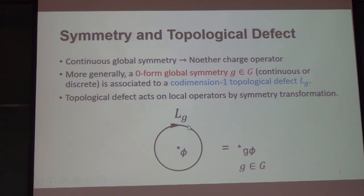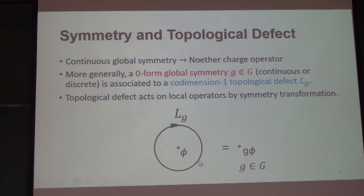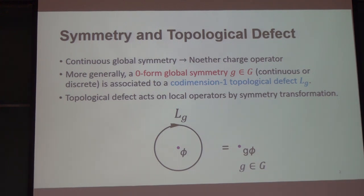As you shrink this co-dimension one topological defect to smaller and smaller size, since it's topological you don't change the answer at all. When the manifold is extremely small, this reproduces a local operator for you. In the case when this topological defect is the charge operator of a certain symmetry, this contraction gives you another local operator that is the symmetry transformation of the original one. This is a very invariant and non-Lagrangian way to think about global symmetry.